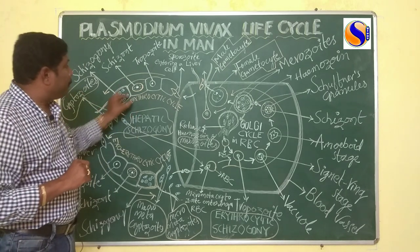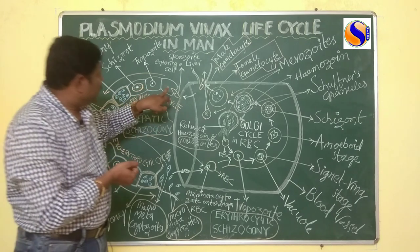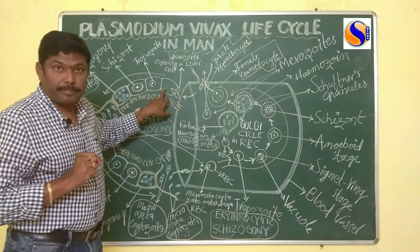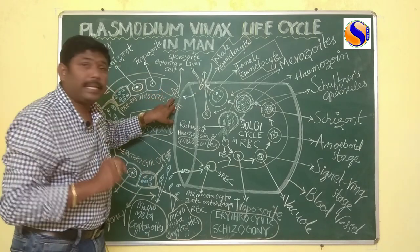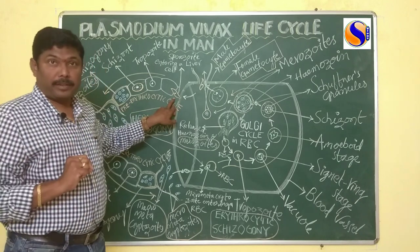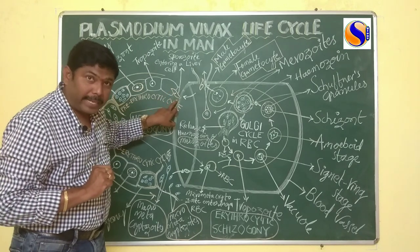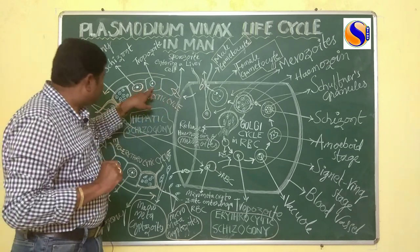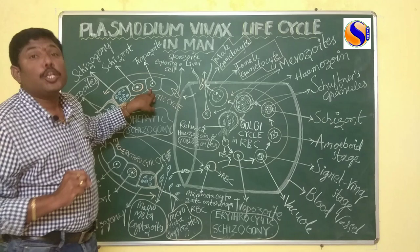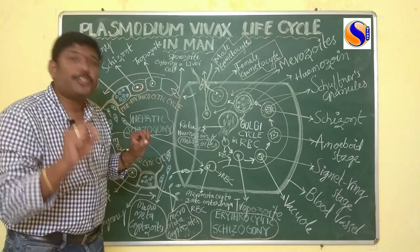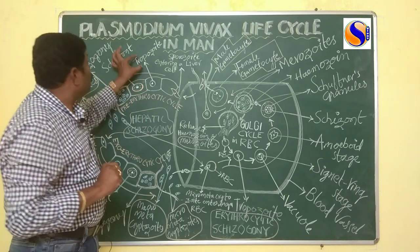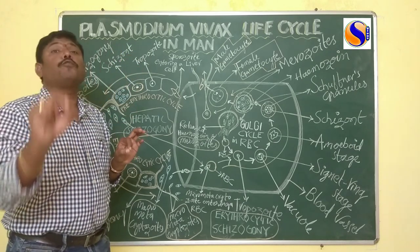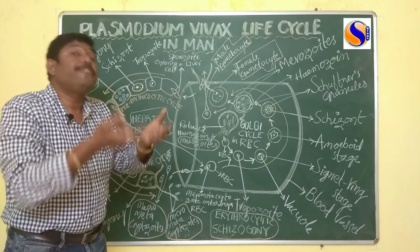In the pre-erythrocytic cycle, the sporozoite enters into the liver cell. The sporozoite is sickle-shaped. When this sickle-shaped sporozoite enters into the liver cell, it assumes a spherical shape, and that stage is called the trophozoite — meaning the feeding stage.